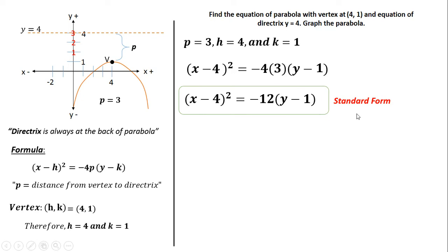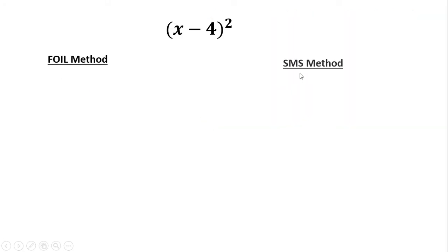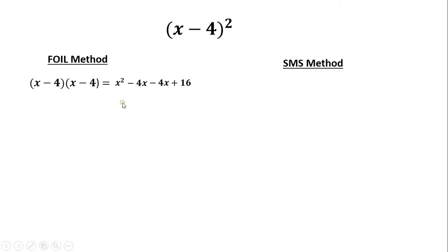To solve for the general form, we expand the whole equation. First, expand (x − 4)². Using the FOIL method: rewrite as (x − 4)(x − 4). Applying FOIL: x·x, then x·(−4), then (−4)·x, then (−4)·(−4) = 16. Combining like terms: −4x − 4x = −8x. So (x − 4)² = x² − 8x + 16.